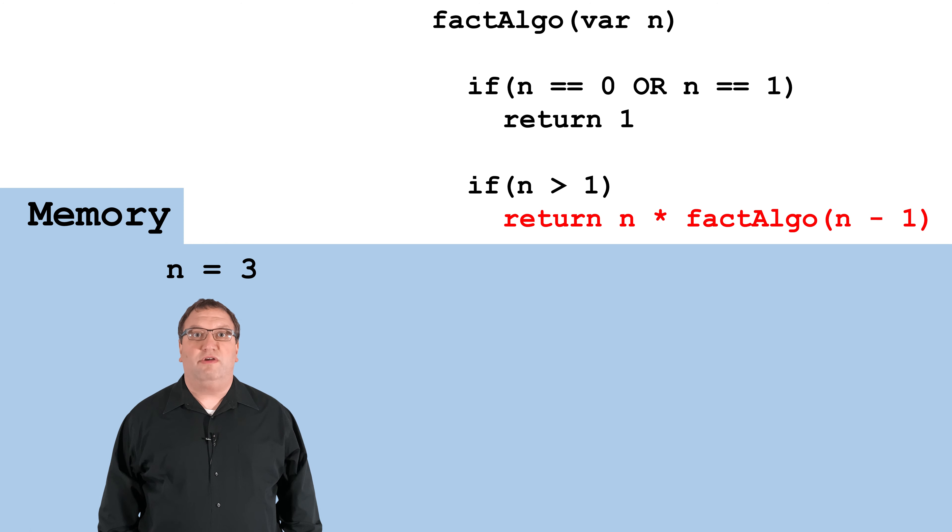Let's look at the pseudocode. 3 isn't equal to 0, and it isn't equal to 1, so I can move on. However, 3 is greater than 1, so I'll execute the indented line of code.